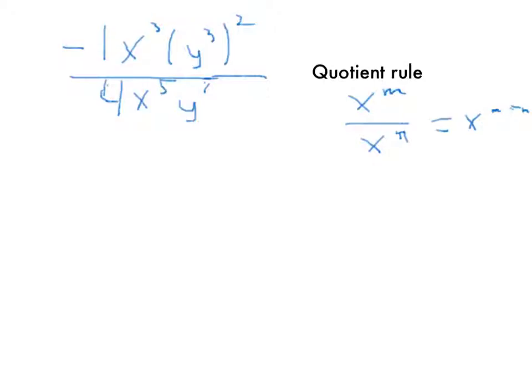Now using the quotient rule, you can take the x's and go x to the third minus 5 equals x to the negative 2.